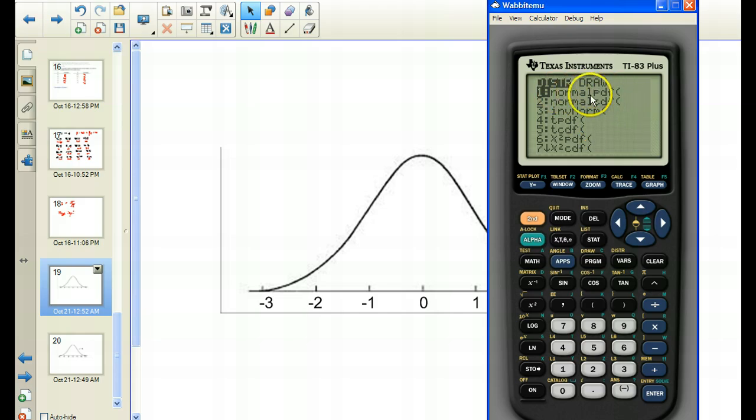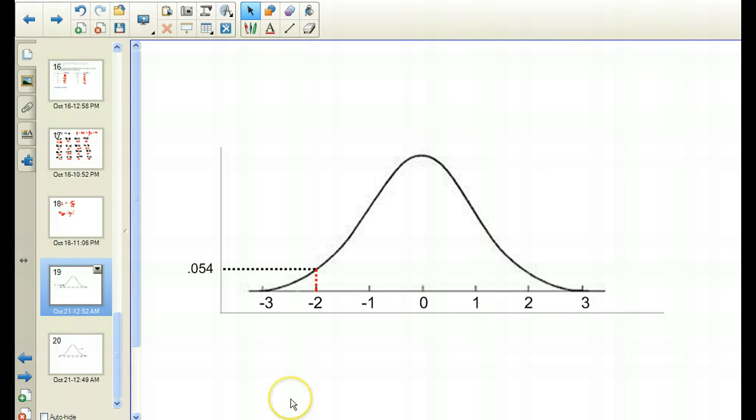Normal PDF gives us the height above these particular values in a normal distribution. So if I wanted to find what is the height above negative 2 in the standard normal distribution, I could type in negative 2. In the standard normal distribution the mean is 0, the standard deviation is 1. I hit enter, and the height is .054 roughly. So that means if I move up from negative 2 on the x-axis, when I hit the curve, when I actually hit the bell curve, that height will be .054.